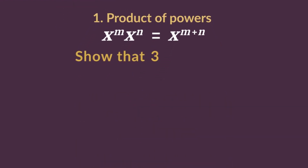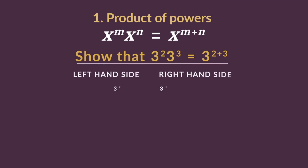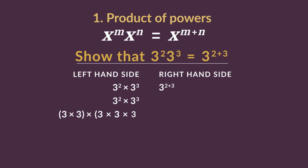Let's show that 3 to the power of 2 times 3 to the power of 3 is equal to 3 to the power of 2 plus 3. So, 3 to the power of 2 multiplied by 3 to the power of 3 is 3 times 3 multiplied by 3 times 3 times 3, which is 9 times 27, which is 243.